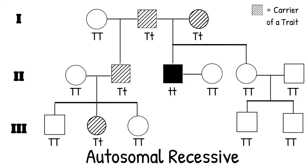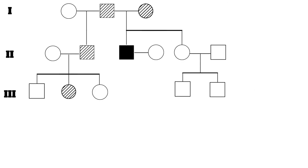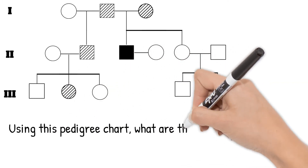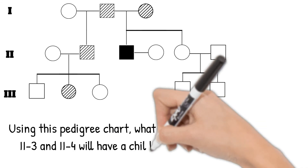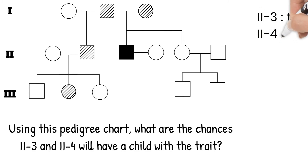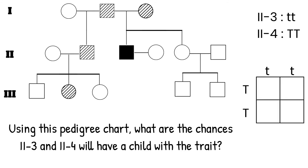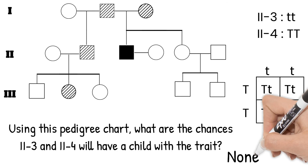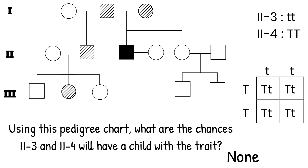Pedigree charts can also be used for genetic cross questions. For example, using this same pedigree chart, what are the chances that 2-3 and 2-4 will have a child with the trait? From the pedigree, we know 2-3 is homozygous recessive and 2-4 is homozygous dominant from how they're drawn on the chart. Put those into a Punnett square and we see none of their children will have the trait. All of their children will be carriers, so they will be drawn on the pedigree chart with hash marks.